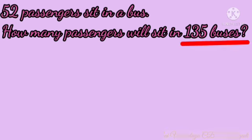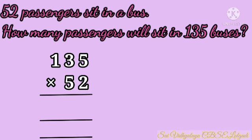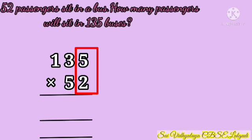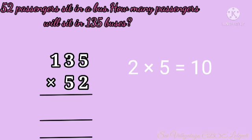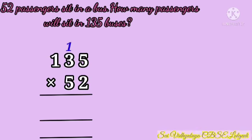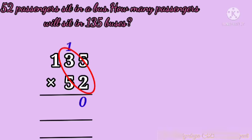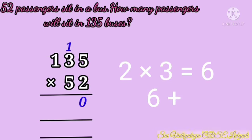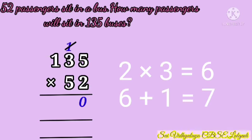We have to find the passengers in 135 buses. Start multiplying the number in the ones place. Multiply 2 with 5: 2 fives are 10 — write 1 at the top of 3 and 0 at the bottom. Then multiply 2 by 3: 2 threes are 6, plus 1 is equal to 7.